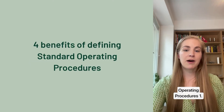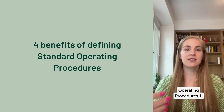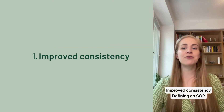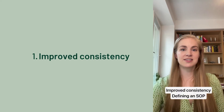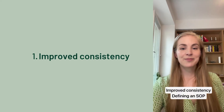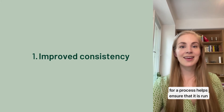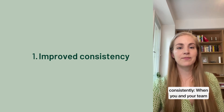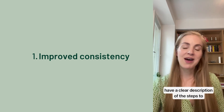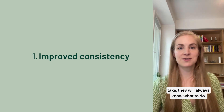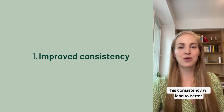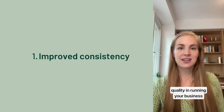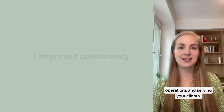Let's talk about the four benefits of describing processes as standard operating procedures. First, improved consistency. Defining an SOP for a process helps ensure that it is run consistently. When you and your team have a clear description of the steps to take, they will always know what to do. This consistency will lead to better quality in running your business operations and serving your clients.